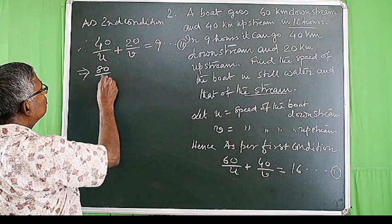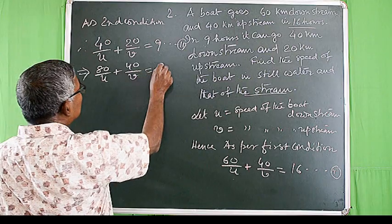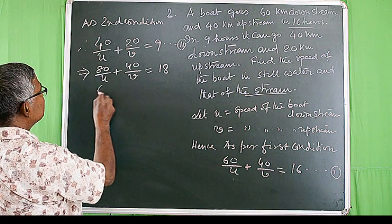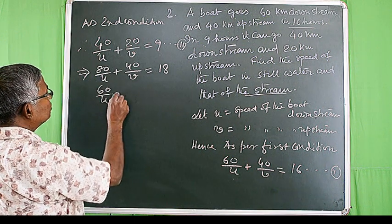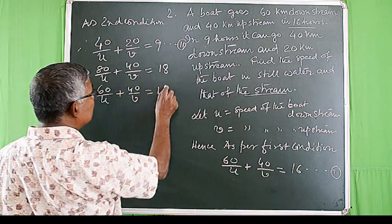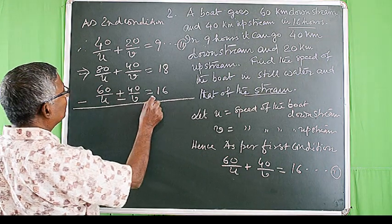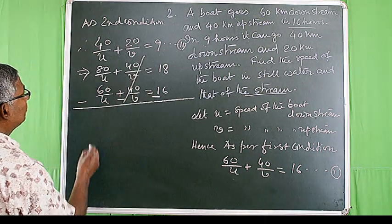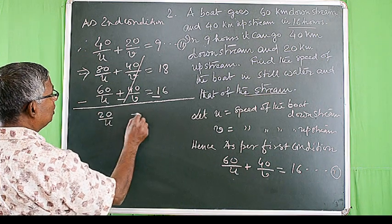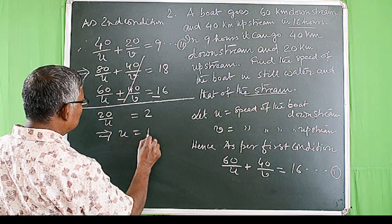Now let us multiply equation number 2 by 2, so it will be 80/u + 40/v = 18. The first equation is 60/u + 40/v = 16. Let us subtract: we get 20/u = 2, which implies u = 10.